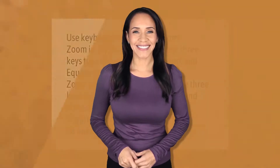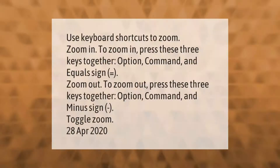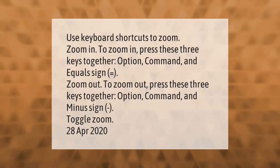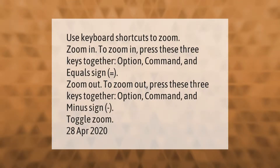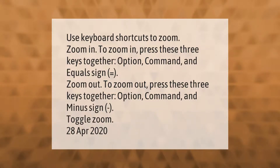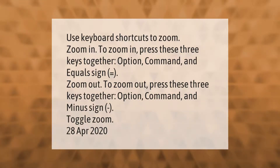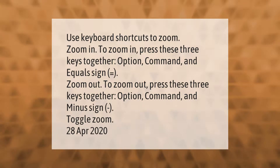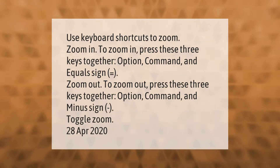Use keyboard shortcuts to zoom. To zoom in, press these three keys together: Option, Command, and equals sign. To zoom out, press these three keys together: Option, Command, and minus sign. This will toggle zoom.